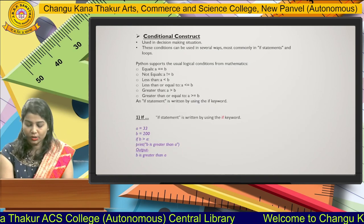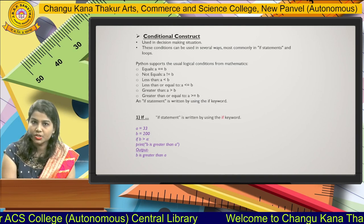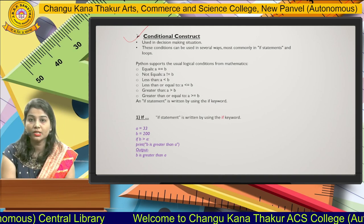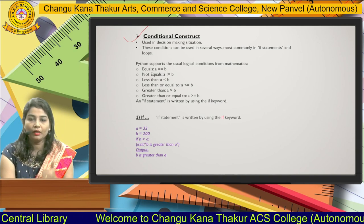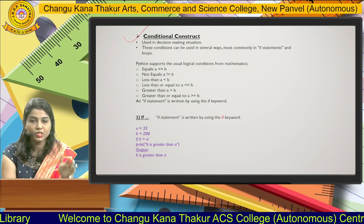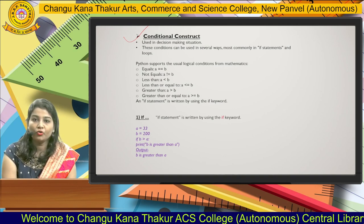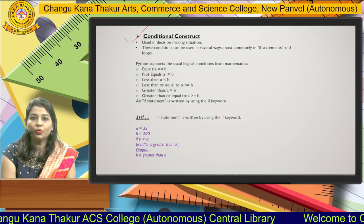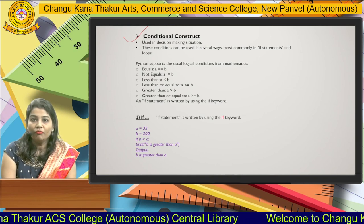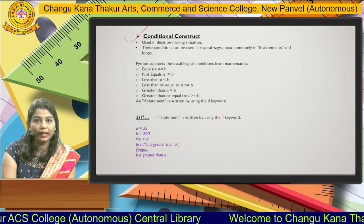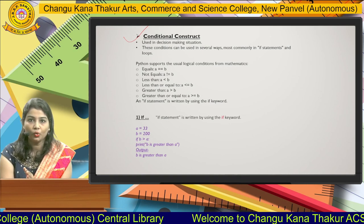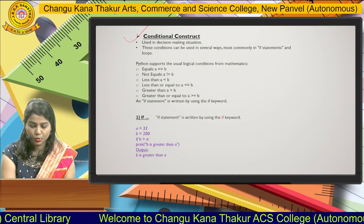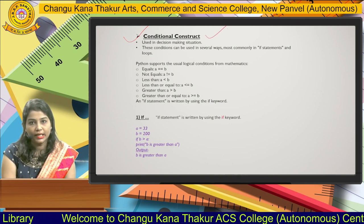We will now move forward to conditional constructs. Before developing any program using conditional constructs, we should have an understanding of variables and data types. Conditional construct is used when you are writing a program and there is a situation where you have to choose between two options — yes or no, true or false. In such situations, we make use of conditional constructs.